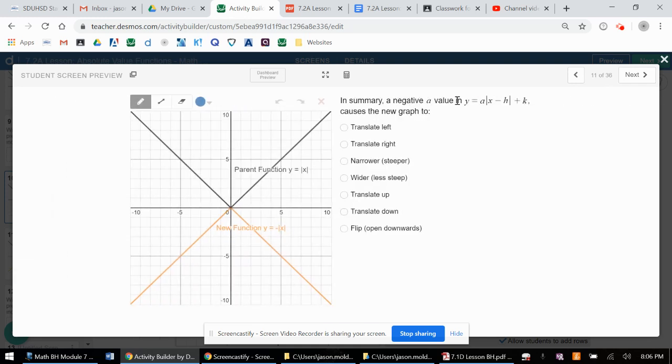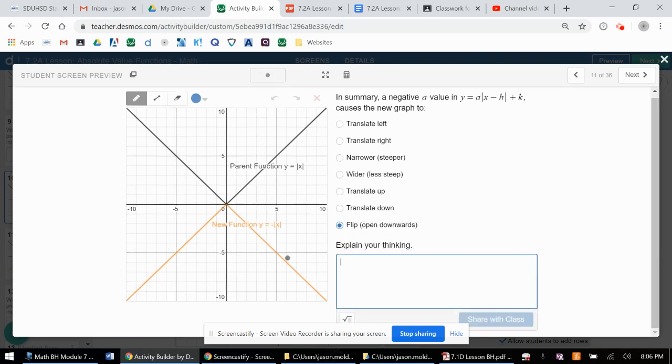In summary, a negative a value in this is going to cause it to flip or open downwards like we saw here. We're going to keep doing this. We're going to keep looking at multiple examples with a, h, and k. We're going to have some nice visuals.